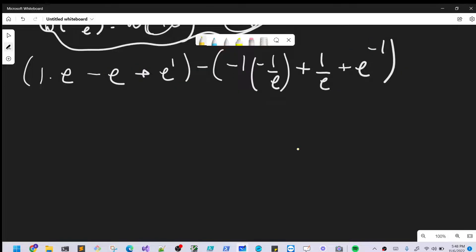So simplifying e minus e, this is 0, but we still have this e. So we're going to have e. And let's simplify this in this parenthesis. So here are minus times a minus to the plus. And then actually this is just, if we rewrite this, it's just another 1 over e.